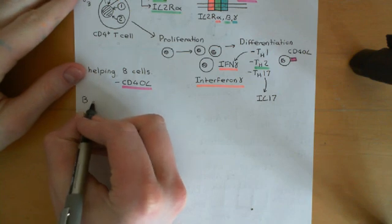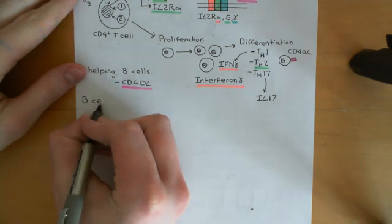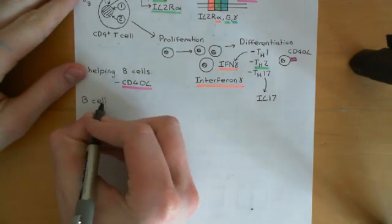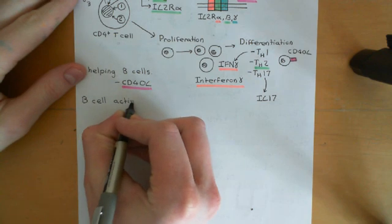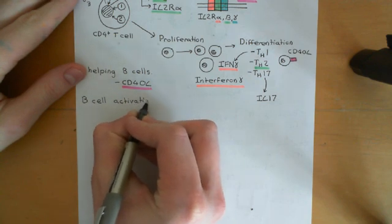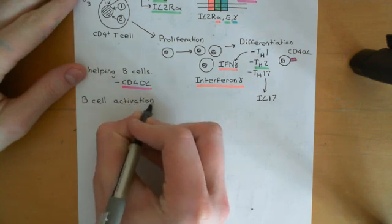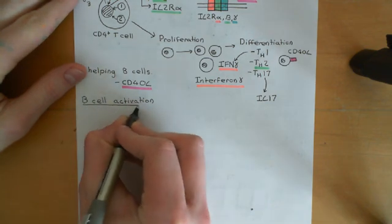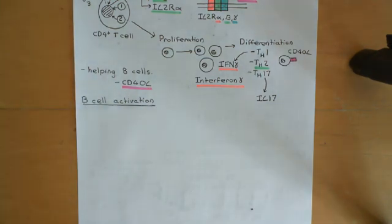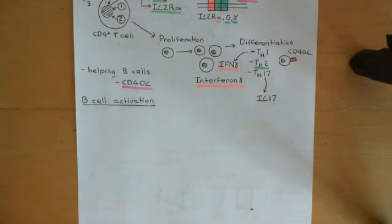This is the B-cell activation, so this does not occur in non-atopic asthma, and again we don't know the reasons why some people get atopic asthma and some people get non-atopic asthma. What I'm going to do is merely describe what must happen in people with atopic asthma who do get this B-cell activation.